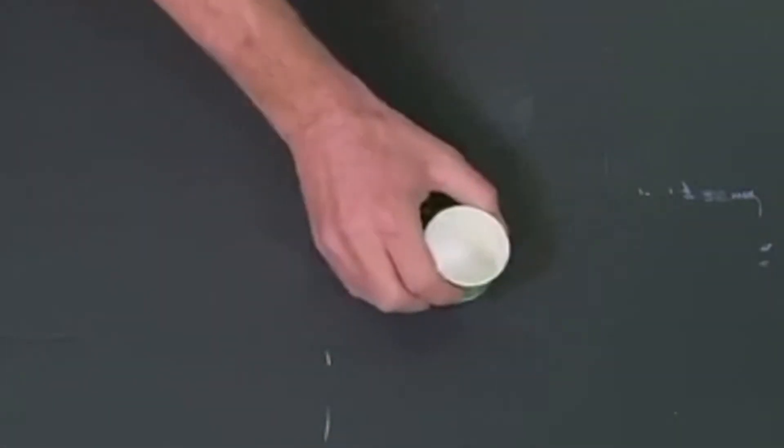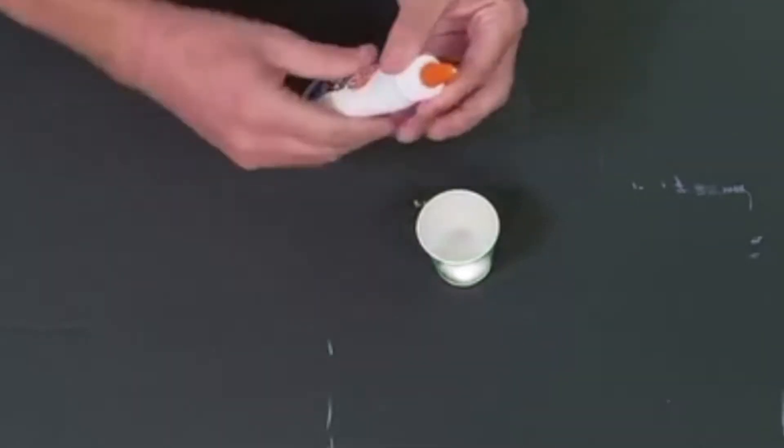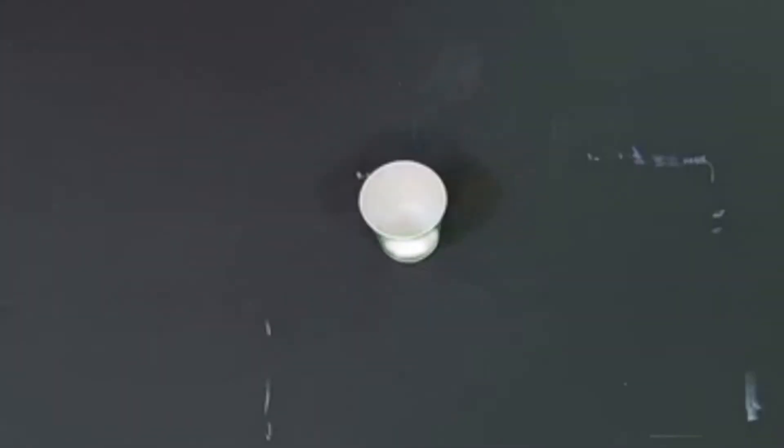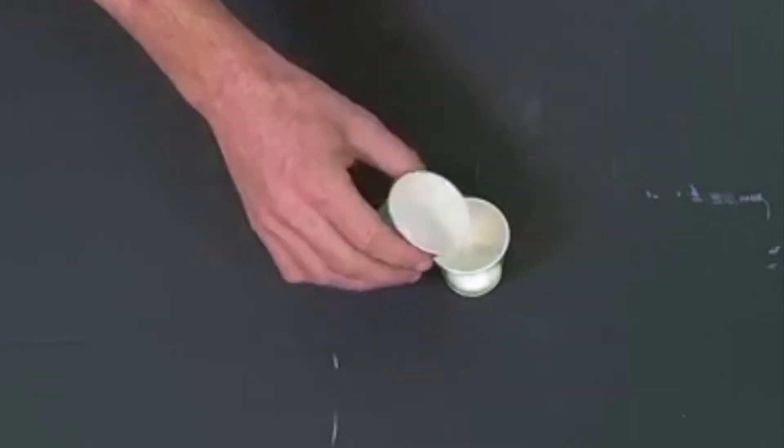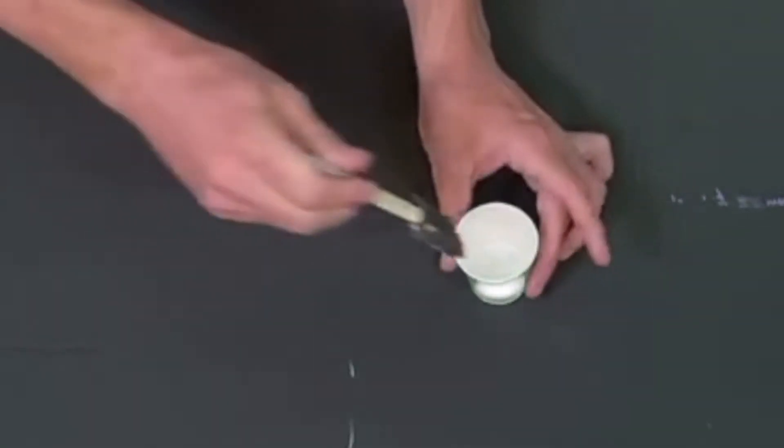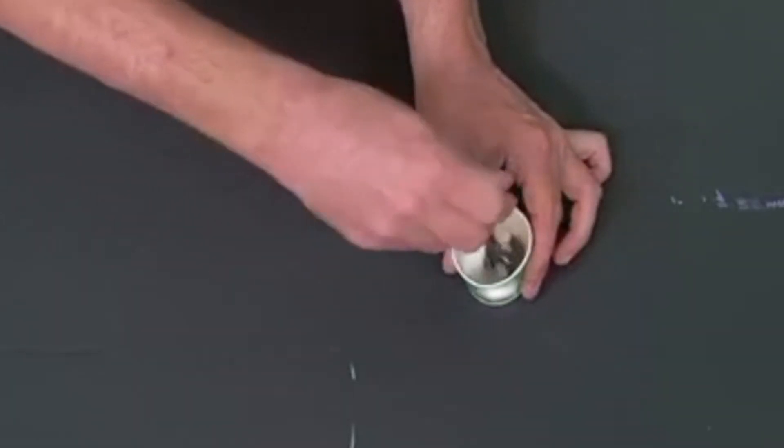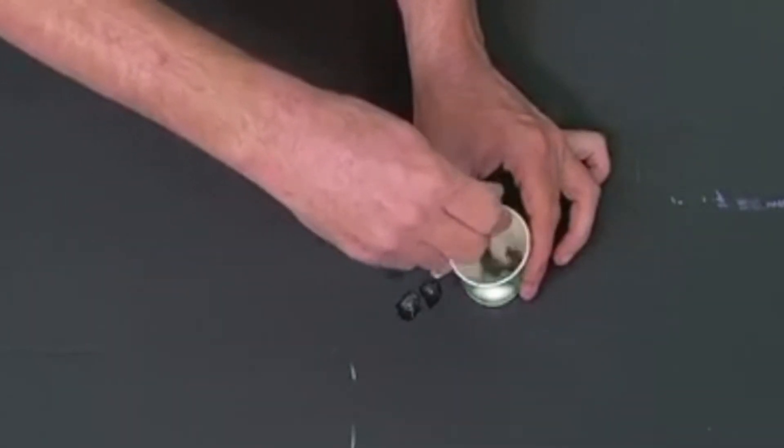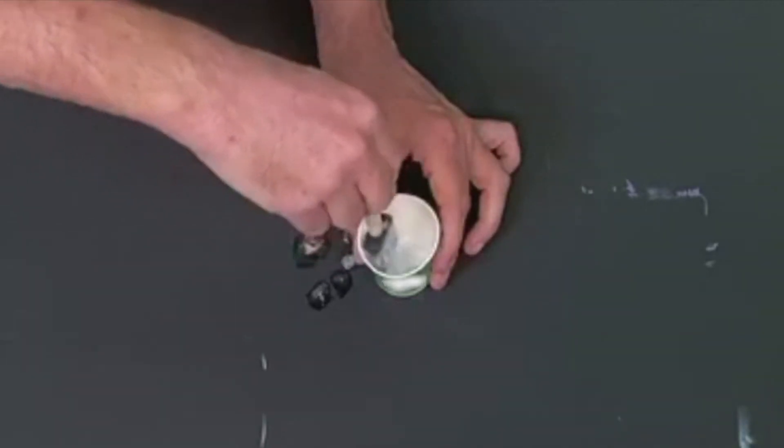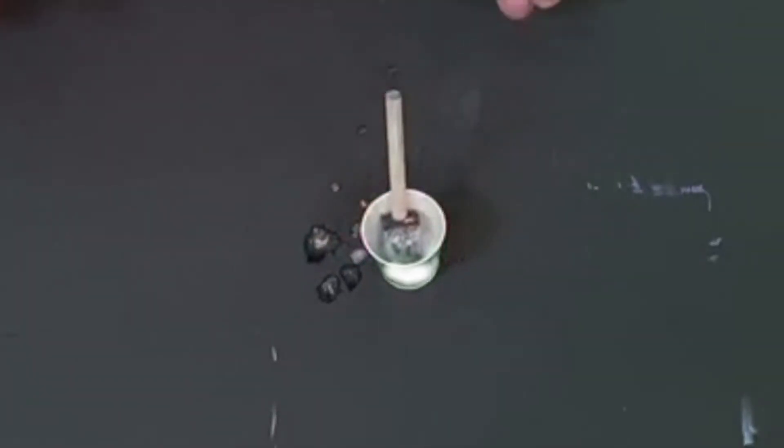First, get a cup or a bowl and add some glue. Then add a little bit of water to it. Now use your paintbrush to mix it together. This will create a Mod Podge. Now set it aside.